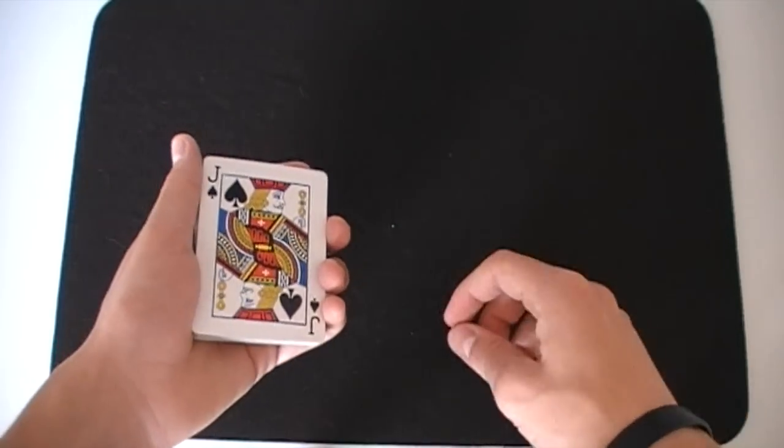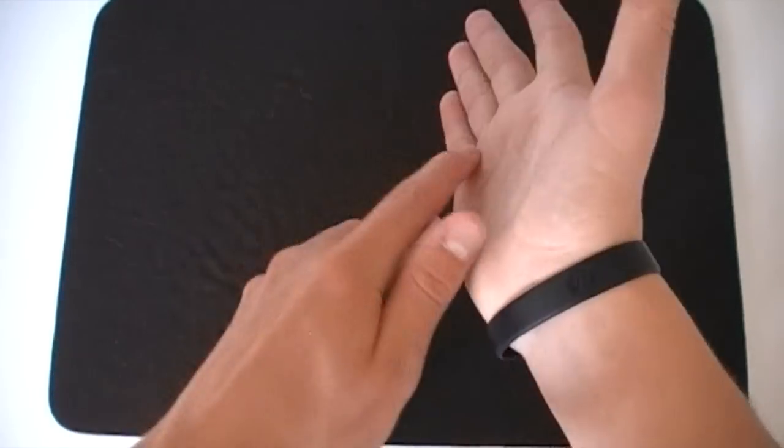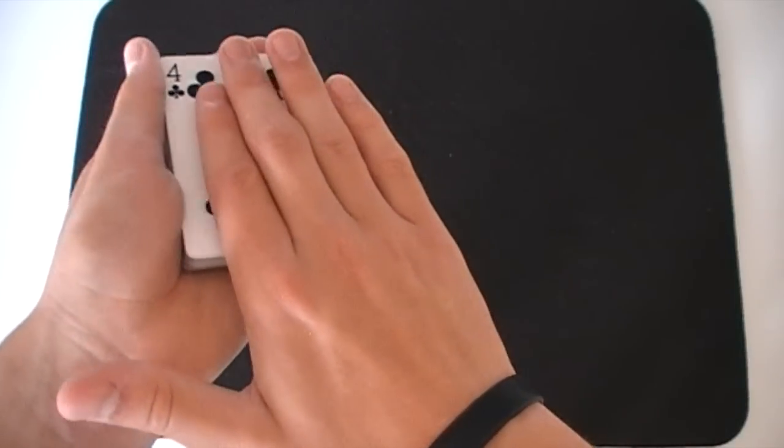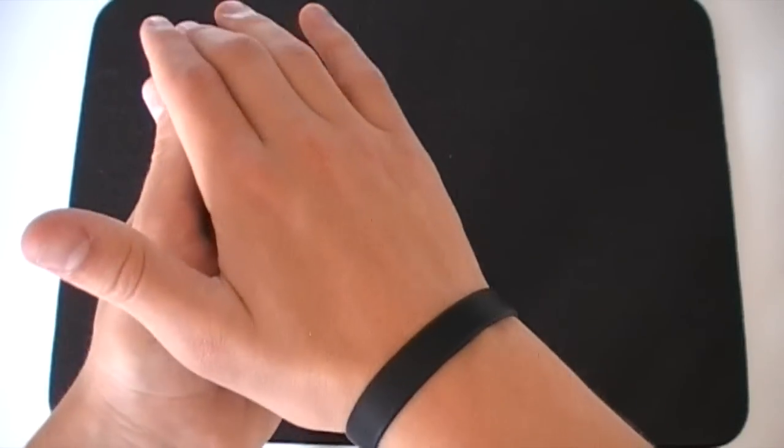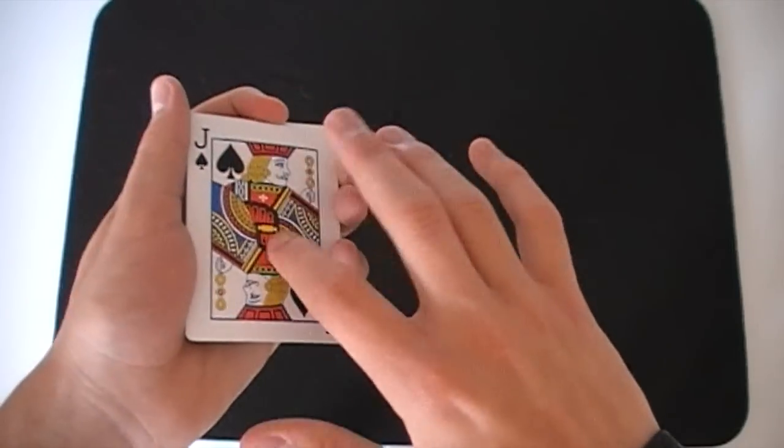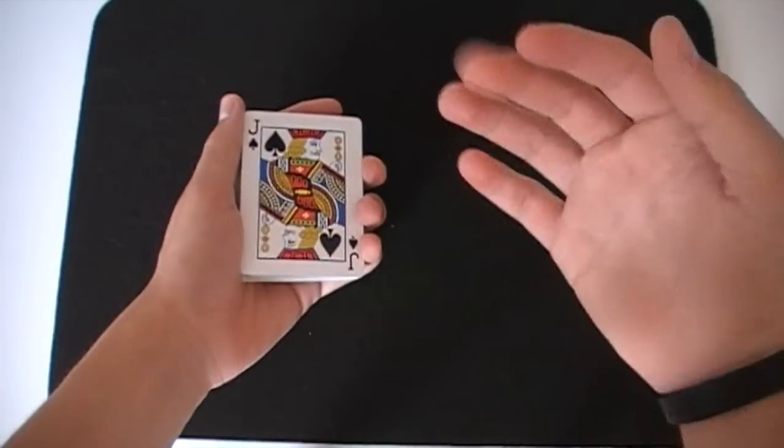So once again you've shown your hand completely empty, you bring the card backwards to the right, and then you bring your hand all the way forwards, line the cards up, and then show the cards to have changed. And that's the color change.